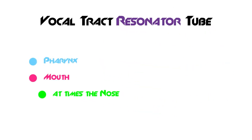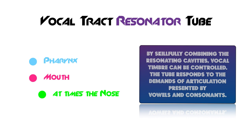Your vocal tract resonator tube is made up of three main parts, though two are more important. The pharynx and your mouth are the most common resonators, and sometimes your nose is involved. If you think about people with a very nasal sound — like Gwen Stefani from No Doubt — they're using their nasal cavity as a resonating space just as much as their mouth and pharynx. By skillfully combining the resonating cavities, vocal timbre can be controlled.